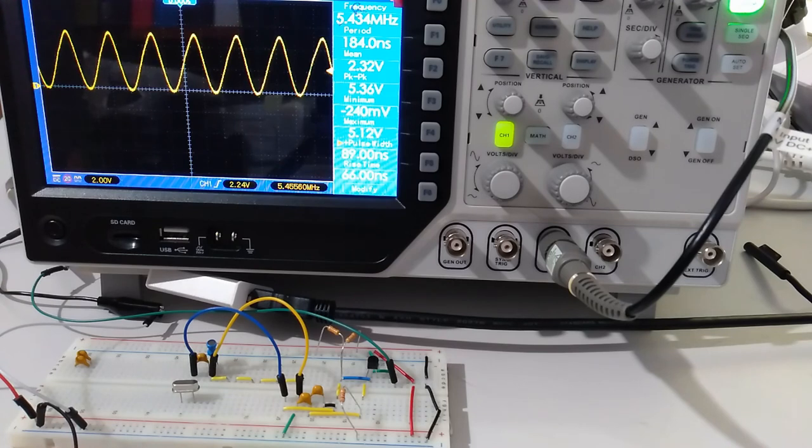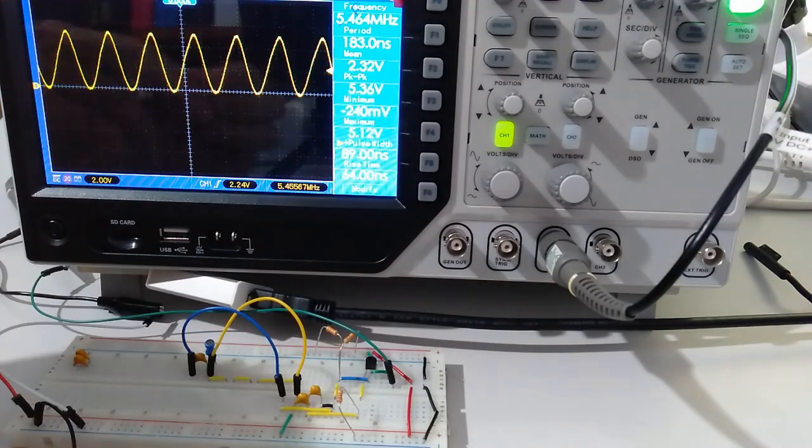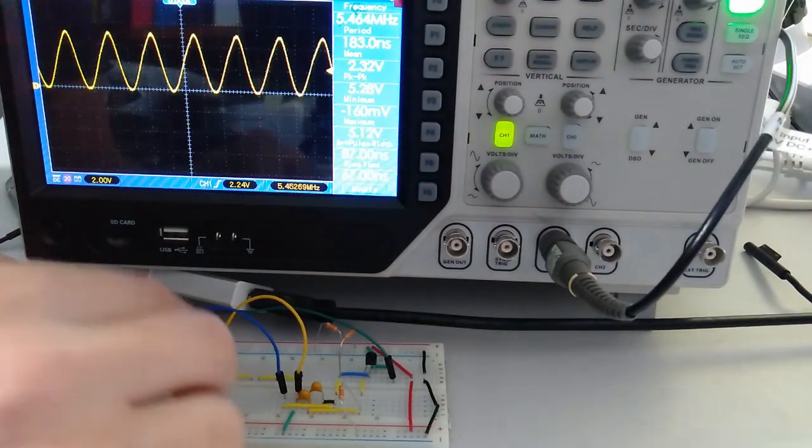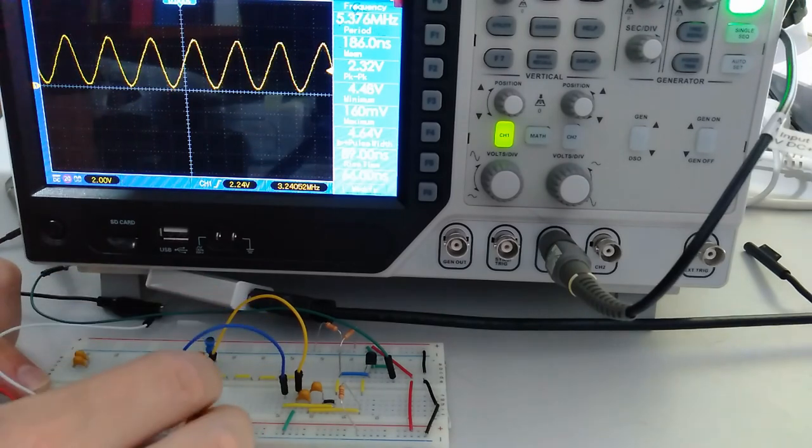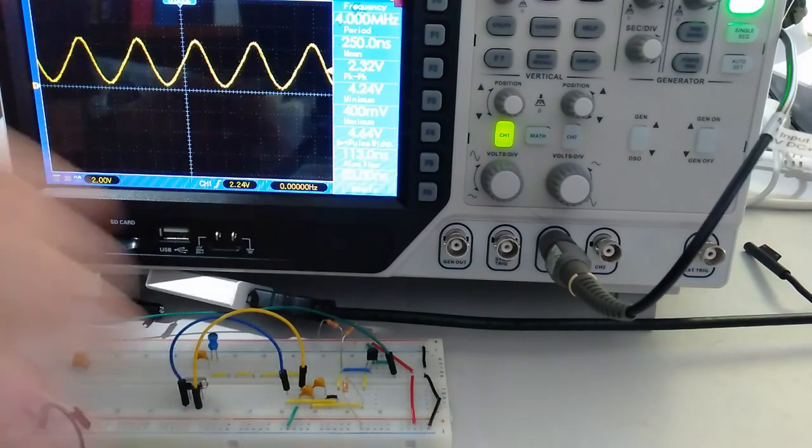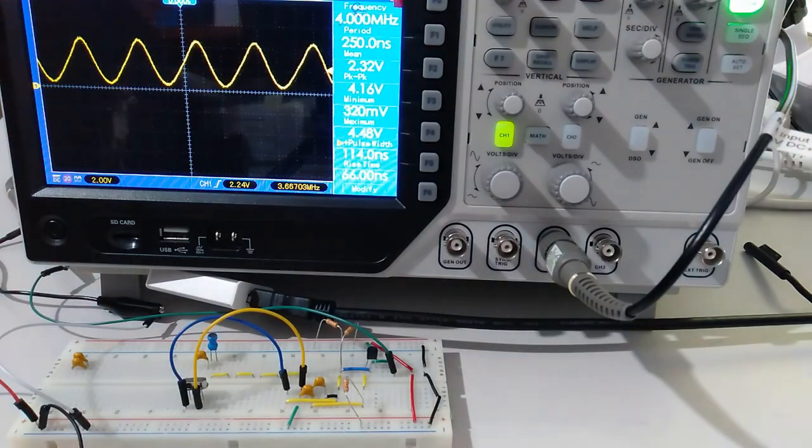The other cool thing is that the equivalent circuit for a crystal is very similar to an LC circuit, so we can use this circuit to make a crystal oscillator. This one's running at 4 megahertz.